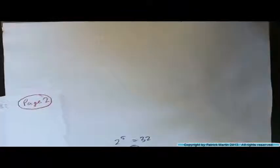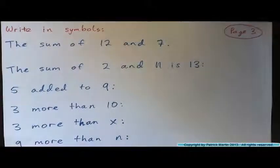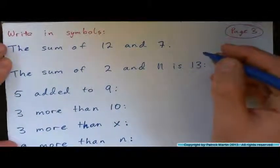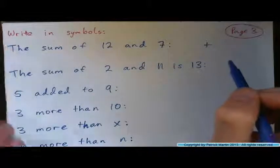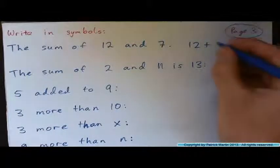And page three, we'll go from words to symbols. So how would you write the sum of four and seven with symbols? Use the plus sign. The sum of, oh sorry, twelve and seven. The sum of twelve and seven? Twelve plus seven.